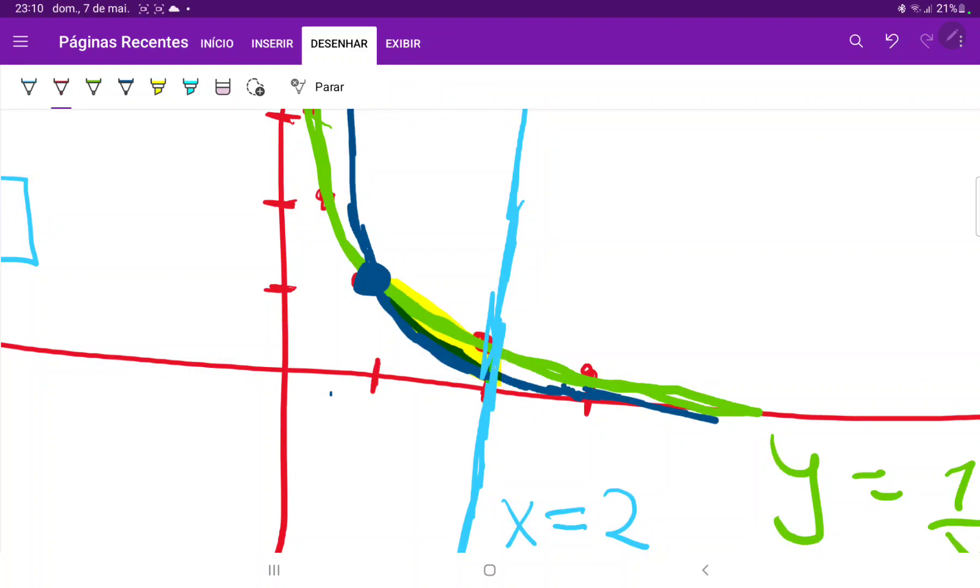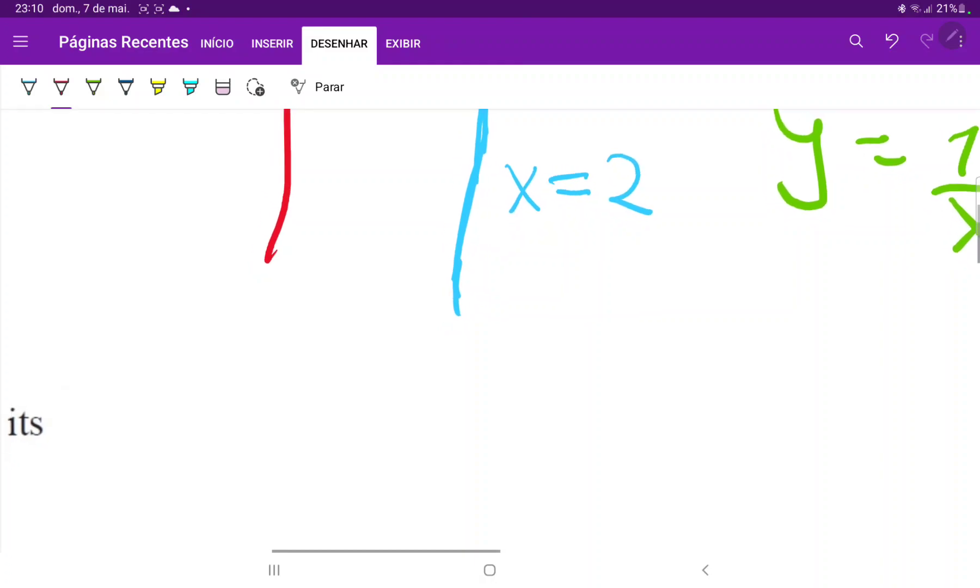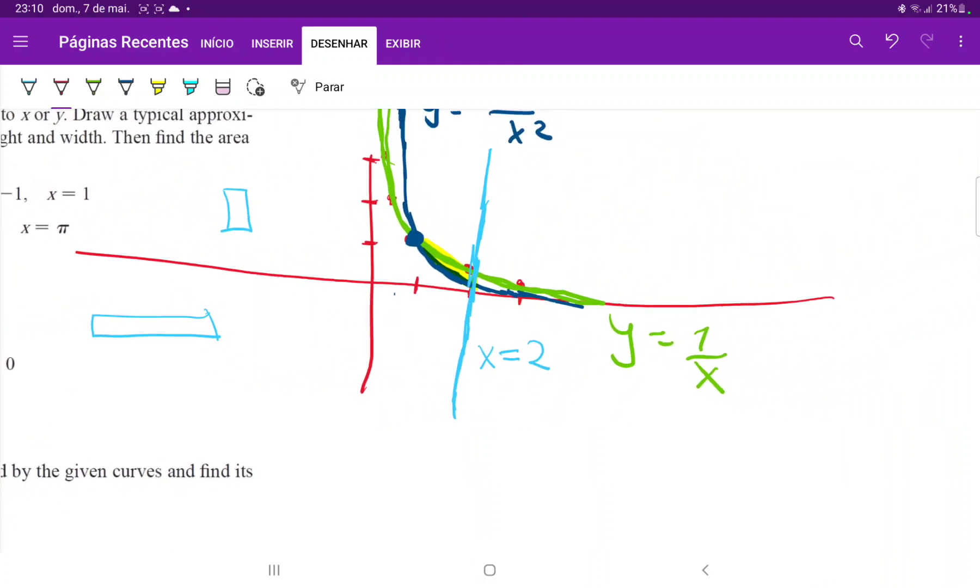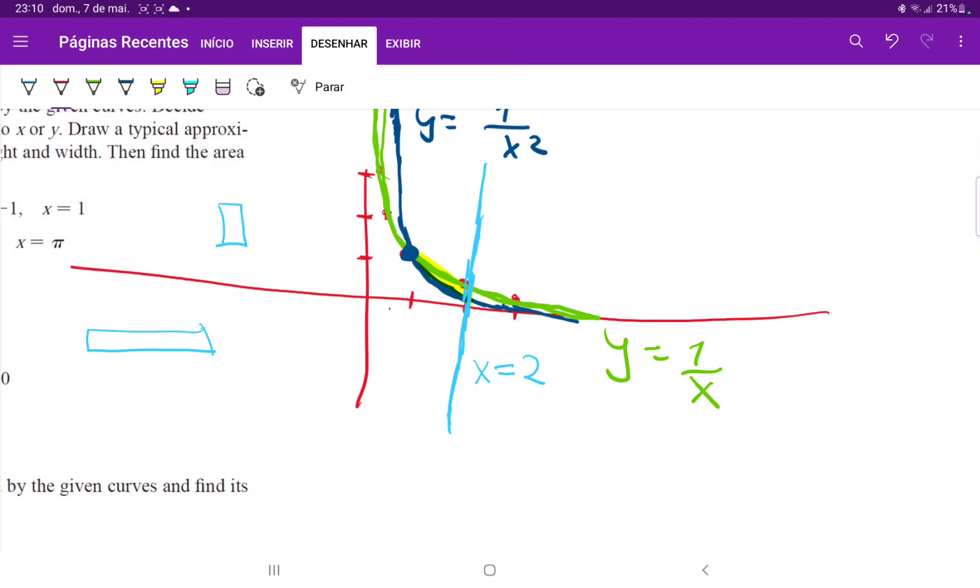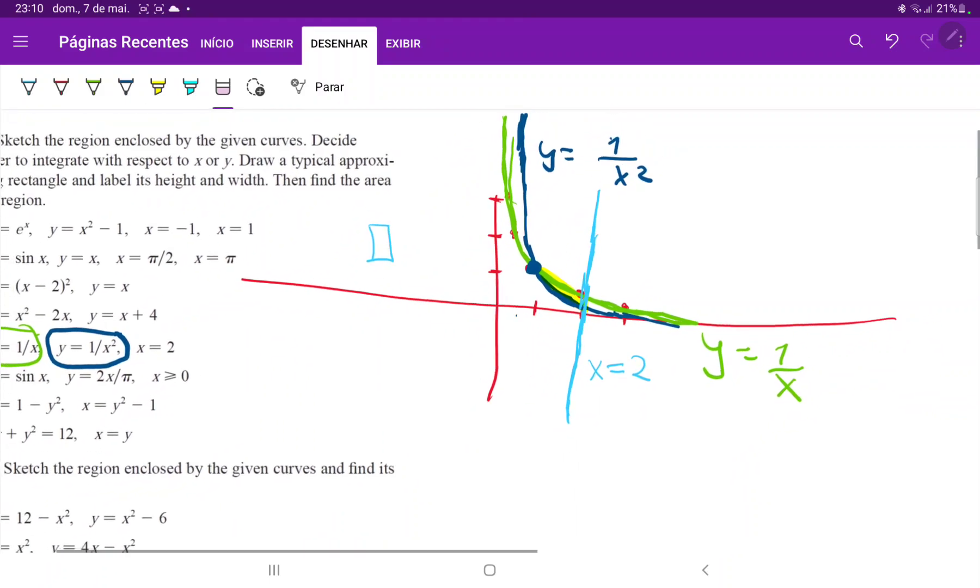And the light blue line would be the upper function, and the dark blue would be the lower. And in some points, the light blue would be the upper, and the green would be the lower. So we would have to break it down into two different integrals, and we don't want that. We want to just express it as one integral that's nice and easy to calculate.